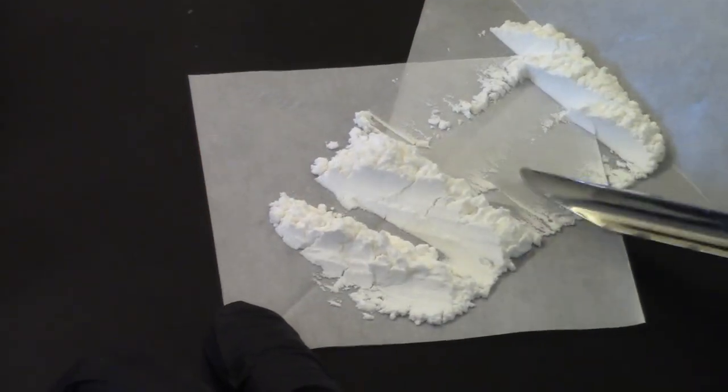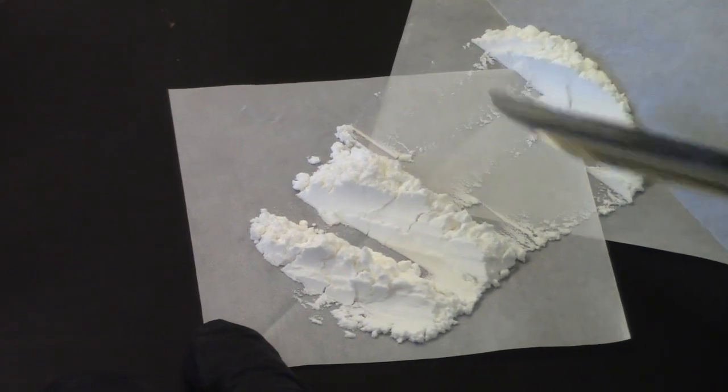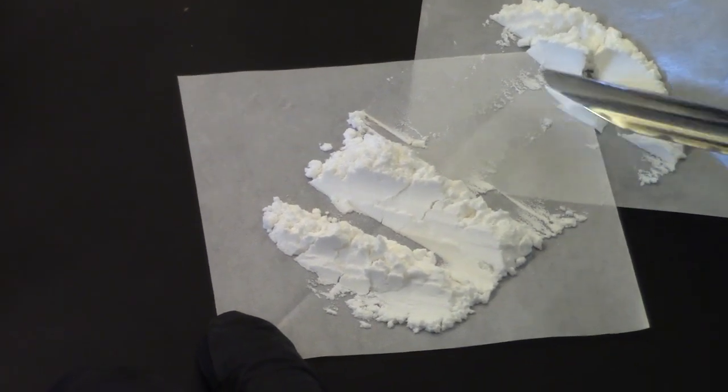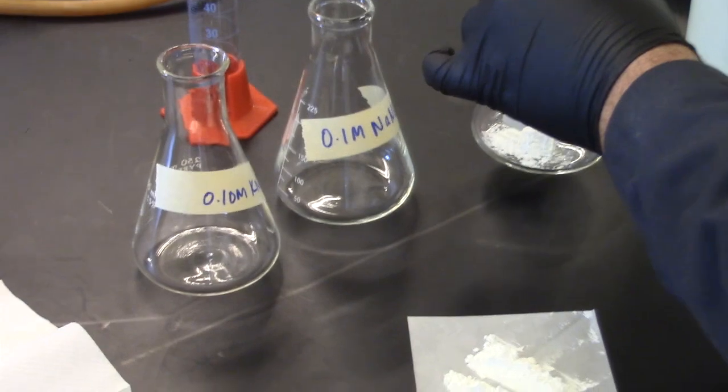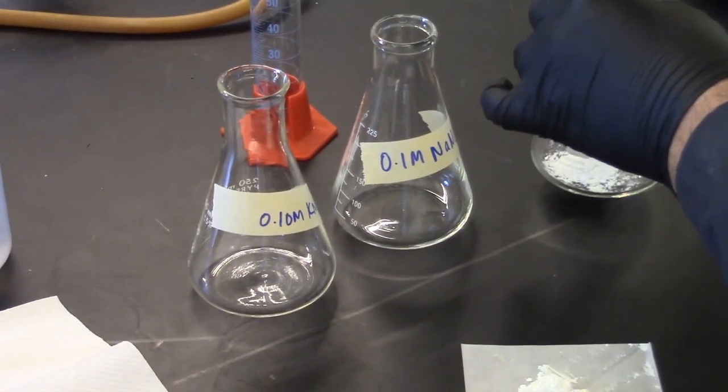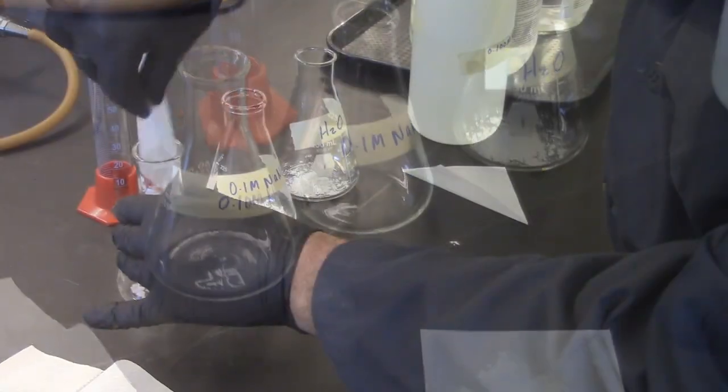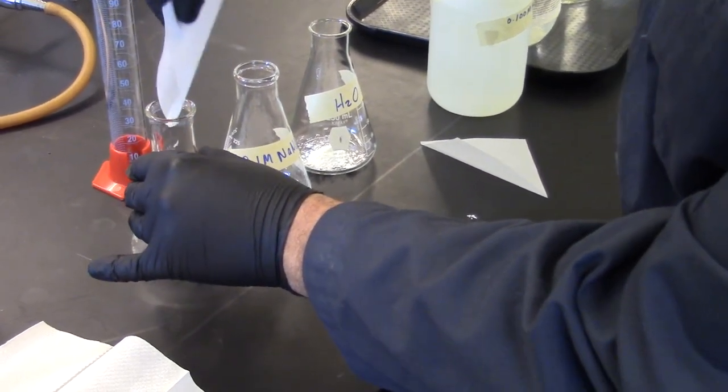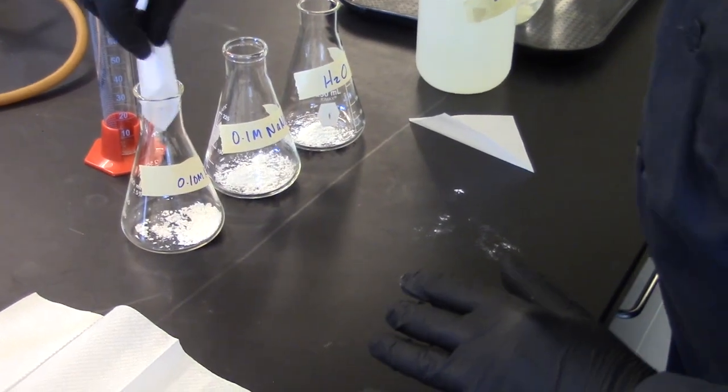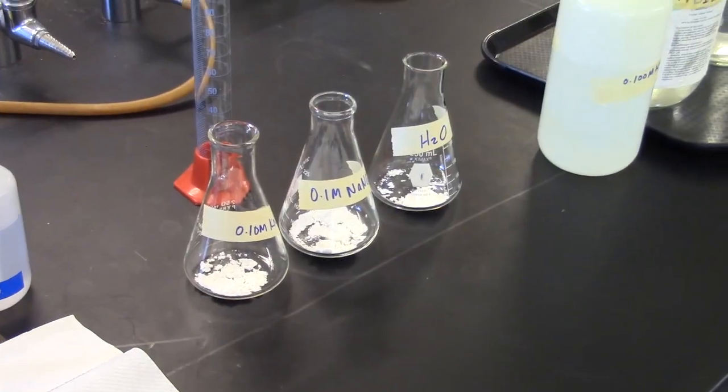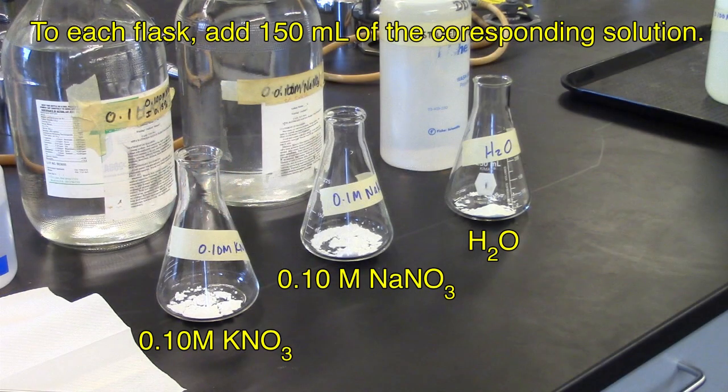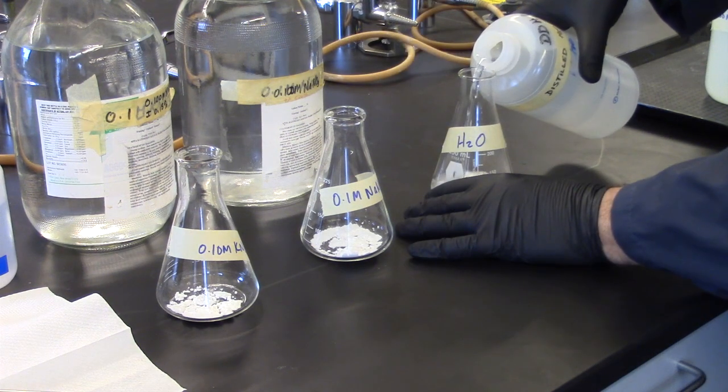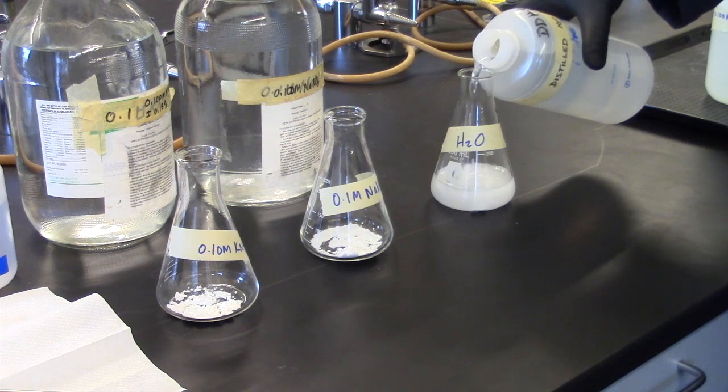Transfer one-third of the portion to weighing paper and add to the flask labeled water. Now you have approximately two grams in each flask. Add to each flask 50 ml of each solution. The graduation in the flask is adequate; you do not need a graduated cylinder.